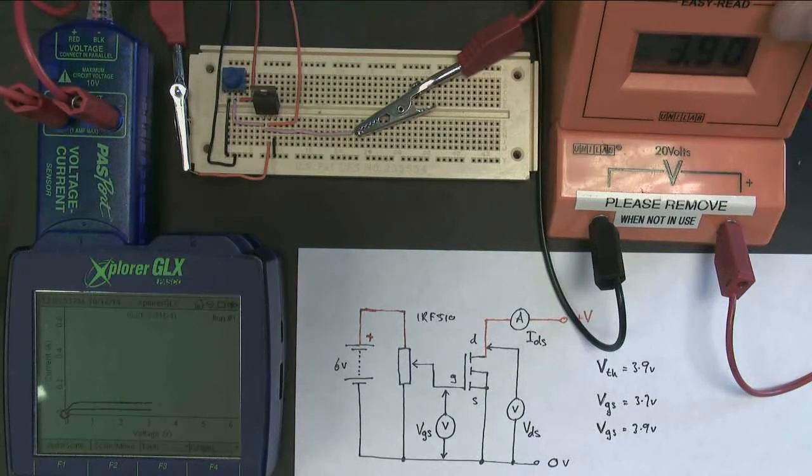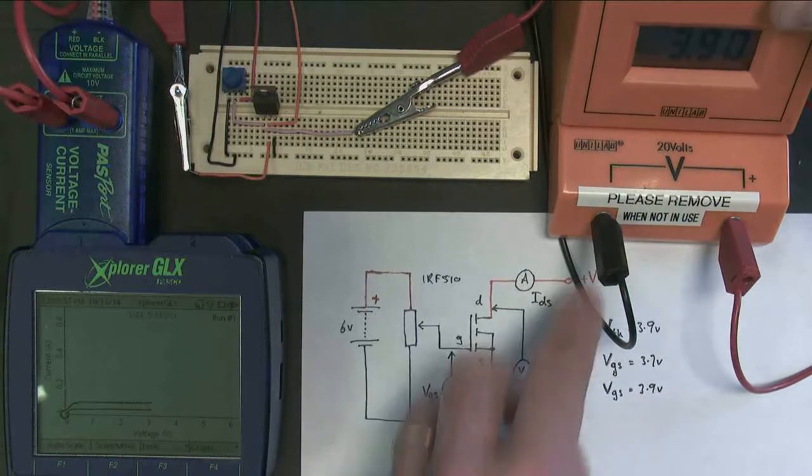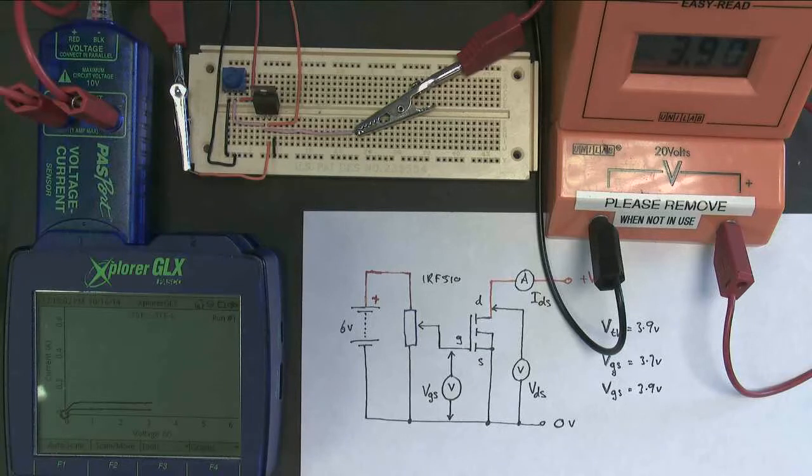Notice how this is not a linear graph. So this is not obeying any sort of Ohm's law or anything like that. This is definitely not an ohmic conductor there, is it? I'm effectively measuring resistance. I'm measuring voltage and current.